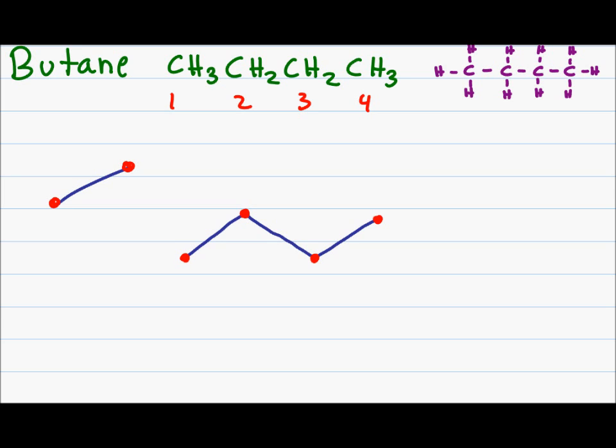Hydrogen atoms are not shown in a skeletal structure. Instead imagine that they're there on the carbon atoms. Again in the beginning you might want to draw little lines representing where you have hydrogen atoms. But eventually you'll get comfortable and used to drawing a skeleton without any hints like circles or lines.